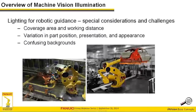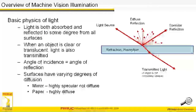It's also common to have confusing backgrounds in the robotic industry. Parts on a conveyor sound straightforward, but in real life oil, dirt, and other defects occur on the conveyor surface. What started as a clean white or colored conveyor turns into a dirty, confusing background. Illumination can help us overcome that kind of confusing background and other confusing backgrounds on the plant floor.